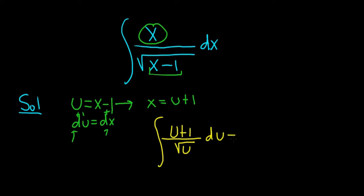Okay, so now we can break it up. We can write this as u over the square root of u plus 1 over the square root of u, right? Just breaking it up. And we have du.